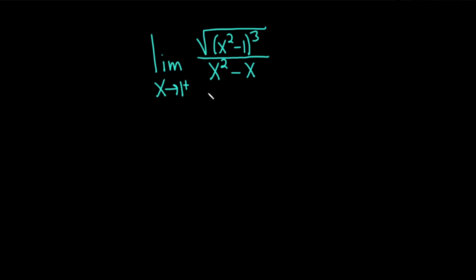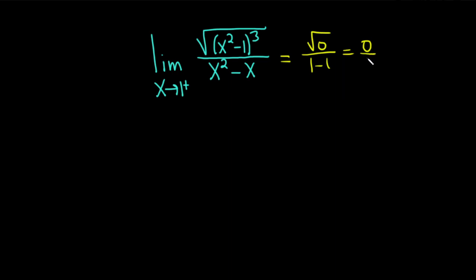Whenever we're looking for limits, the first thing we should do is plug in that number and see what happens. If we do that, we get 1 squared minus 1 in the numerator — basically 0, because we get the square root of 0. And in the denominator we get 1 minus 1, so we also get 0. So we get 0 over 0, which is not a good approach.